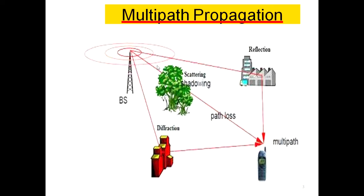That signal takes multiple paths to reach the destination — here, a mobile phone. In this diagram, three different directions for the signal from the base station to the mobile are represented, illustrating multipath propagation.